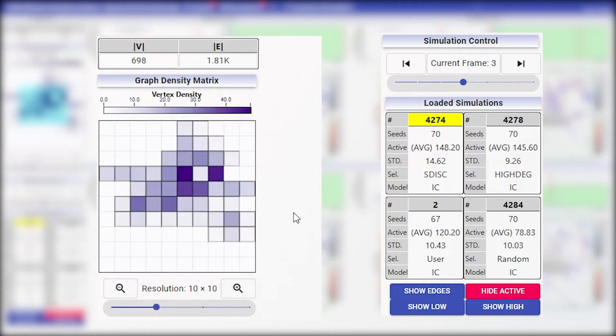Below we have the simulation control view. It allows the user to simultaneously animate the simulations over time or to move to a specific time instant using the slider. Below it presents a set of statistics for the loaded simulations and is used to control the individual simulation views as it will be shown in the following.